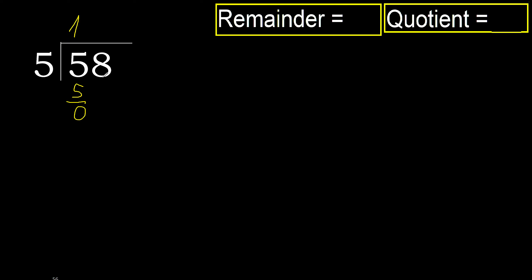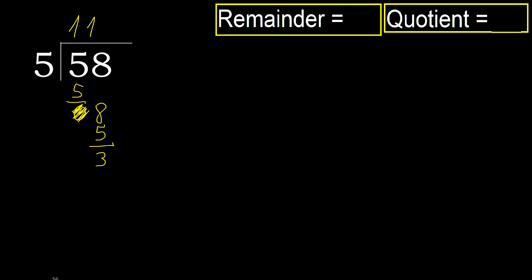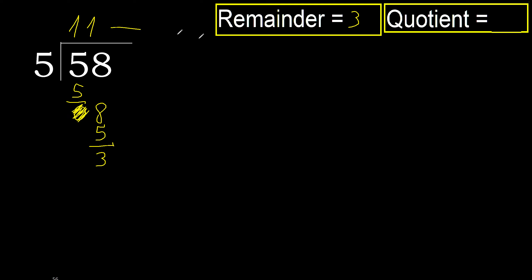Subtract 0. Next, bring down 8. 5 multiplied by 1 is 5, it is not greater. Subtract — remainder is 3. Next, there is no more number, therefore finish it. The answer is 11 remainder 3.